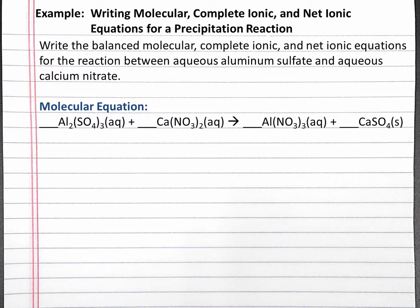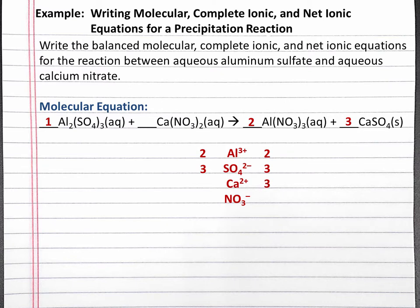To balance the molecular equation, we can balance ions. On the left, we have 2 aluminum 3+ ions in aluminum sulfate, so to get 2 aluminum on the right, we need 2 aluminum nitrate. We also have 3 sulfate on the left, so to get 3 sulfate on the right, we need 3 calcium sulfate. We currently have 3 calcium 2+ on the right, and to get 3 calcium 2+ on the left, we'll need 3 calcium nitrate. We have 6 nitrate on both sides, so this is our balanced molecular equation.